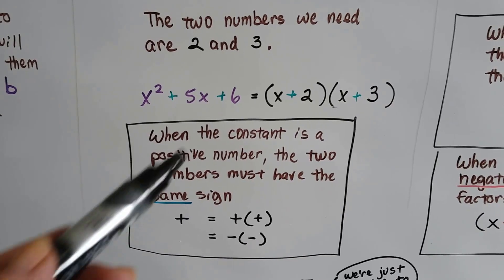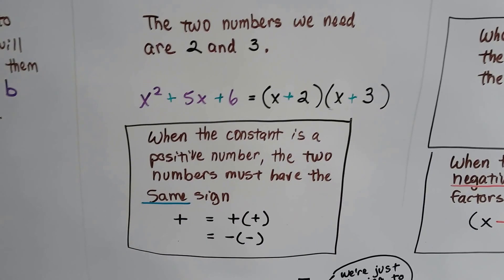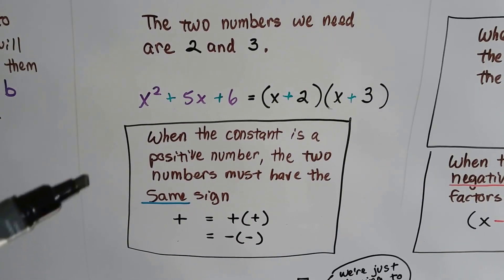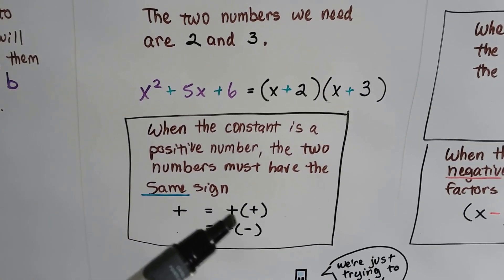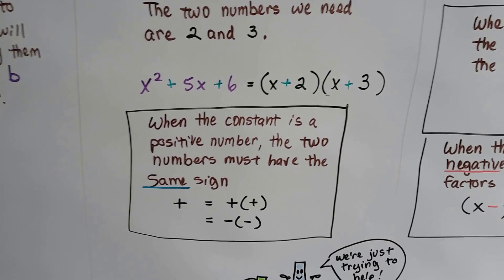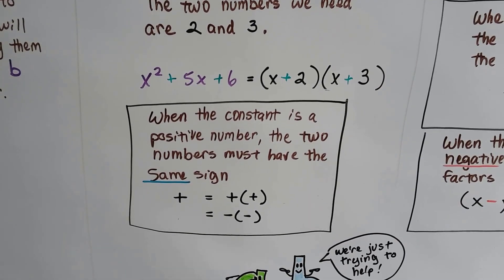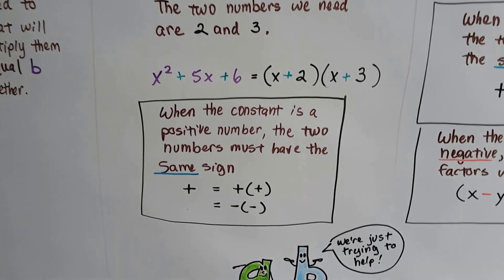And when the constant, this 6, is a positive number, the two numbers have to have the same sign. So both of these would have to either be a positive, because a positive times a positive is a positive, or a negative times a negative is a positive. So they're going to have the same sign whether it's positive or negative. That's if this last guy is a positive.